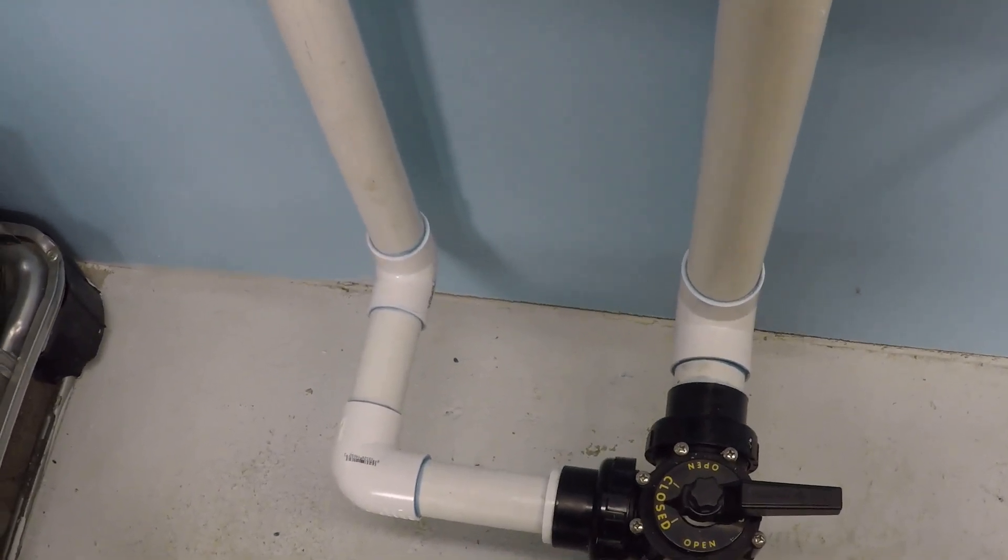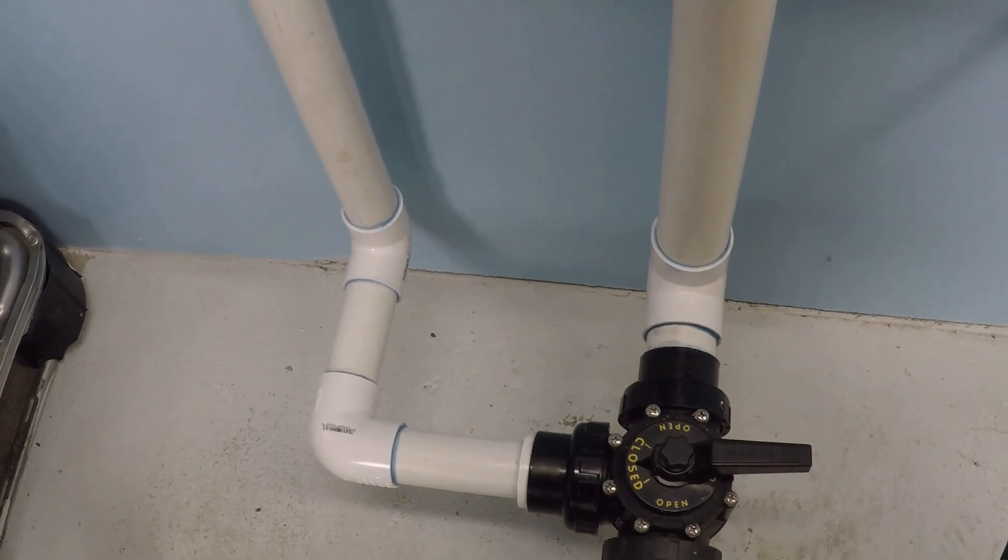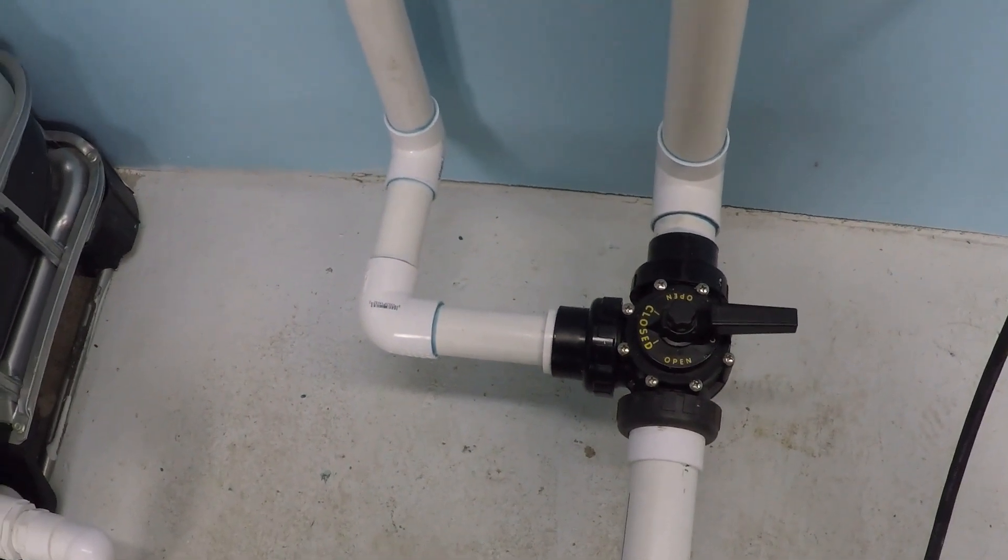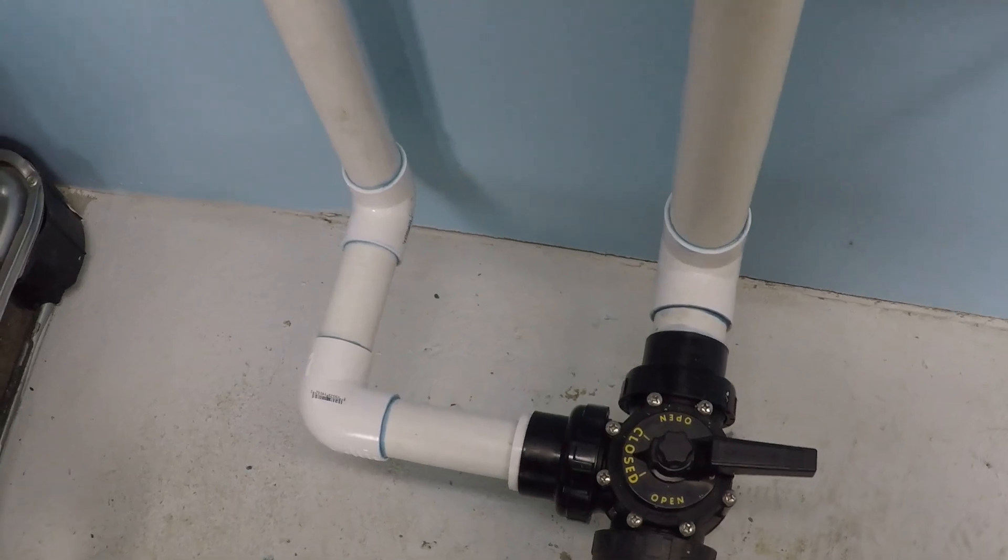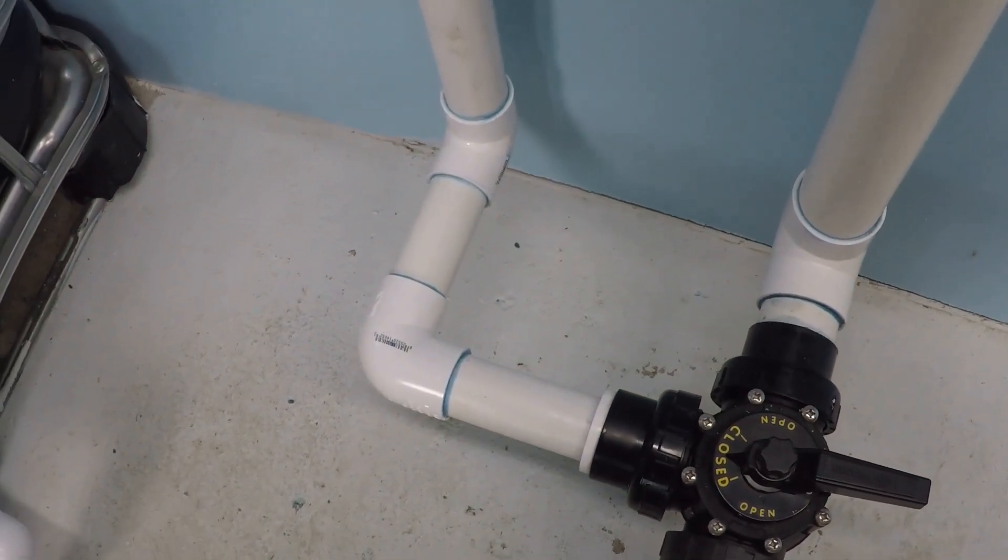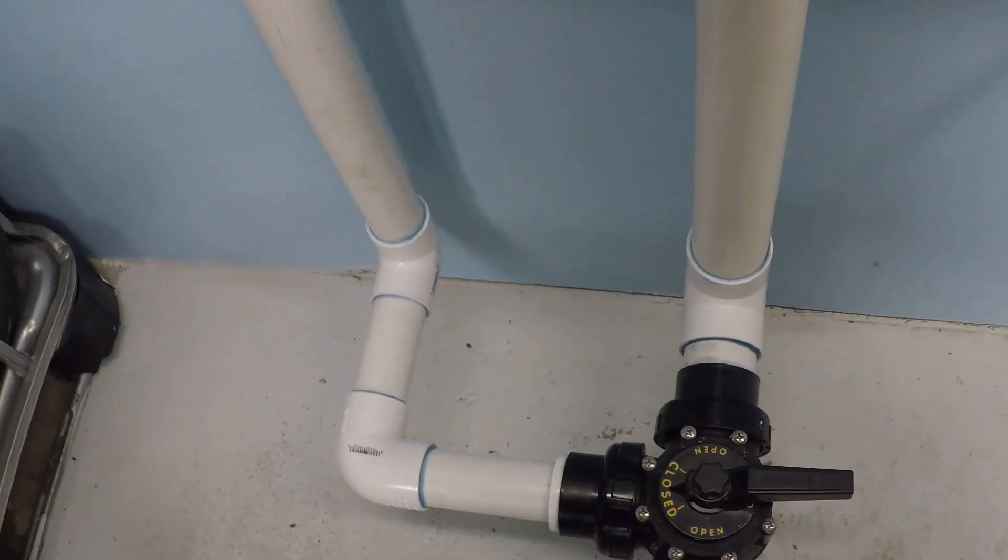If you're shopping for a pool pump, the first thing I want you to do is go outside and look at the suction side of your current pump installation, determine what size plumbing you have, and how many suction lines you have.